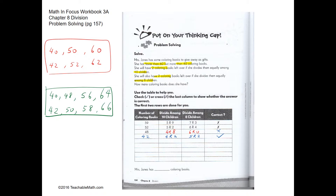We can use a table with guess and check, or we can use a list to help us. Let's use a different color. Over here we have multiples of 10. It says that if she divides by 10, she will have 2 left over. So what numbers between 40 and 60, when divided by 10, give a remainder of 2? We can have 42, 52, and 62. However, 62 cannot be the answer because it has to be less than 60.